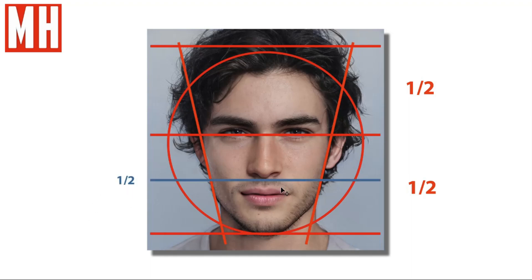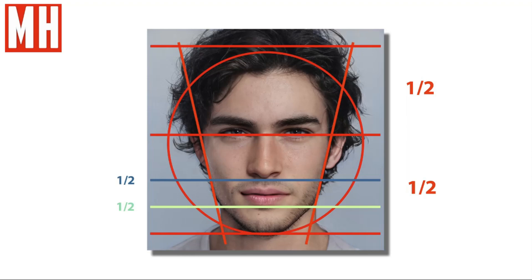Looking further down, if you take exactly half of the space between the eyes and the bottom of the chin, you will find the bottom of the nose. So: a circular overall shape, eyes smack in the middle, and then the distance between the eyes and the bottom of the chin cut in half gives the bottom of the nose. For the bottom of the mouth, once again half of that remaining space — so it's half, half, and half.